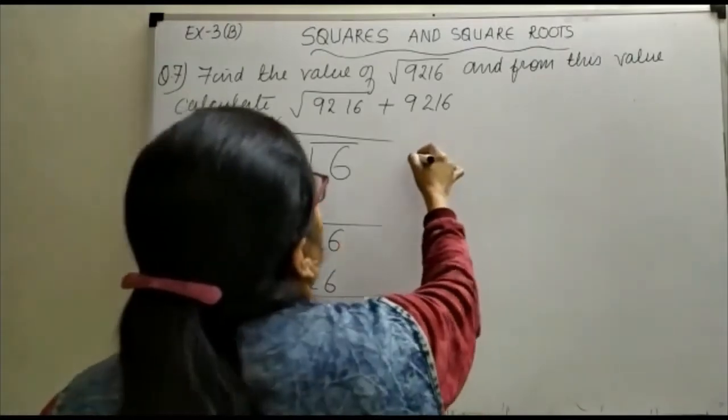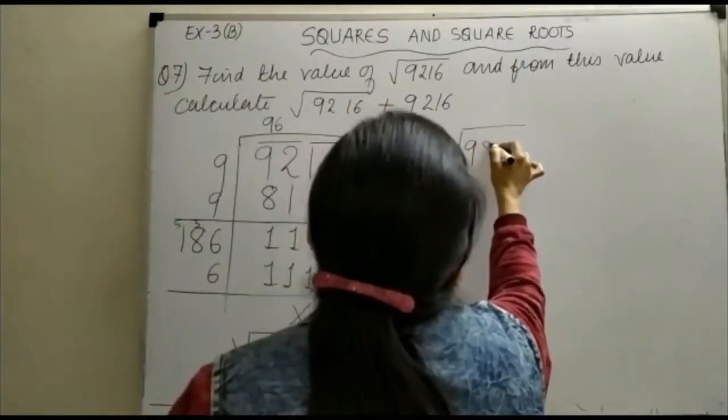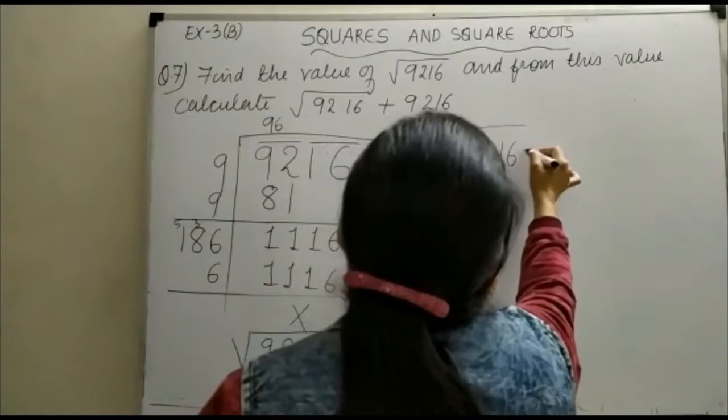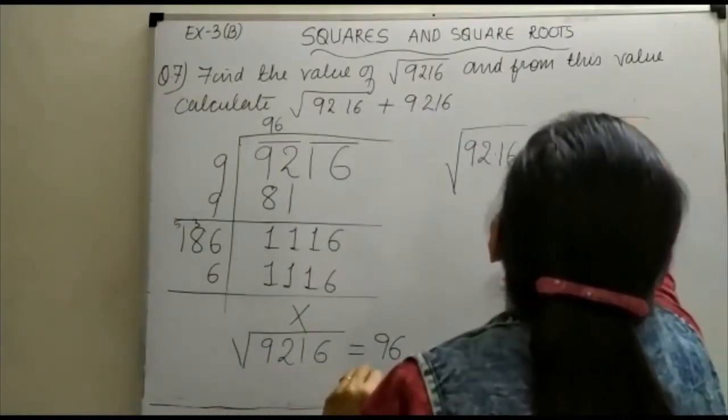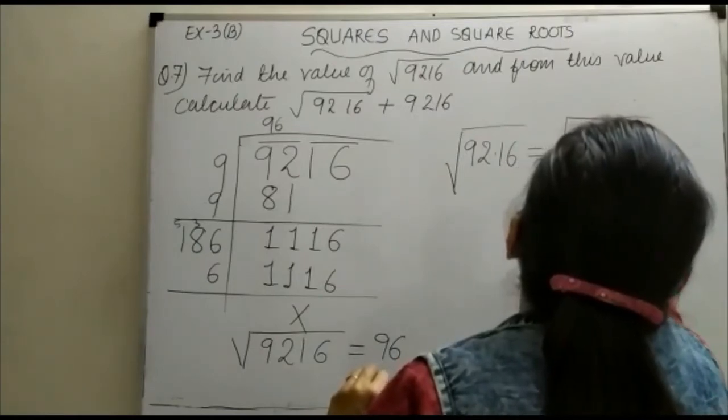Now if we find √92.16, we can write it as √(9216/100).